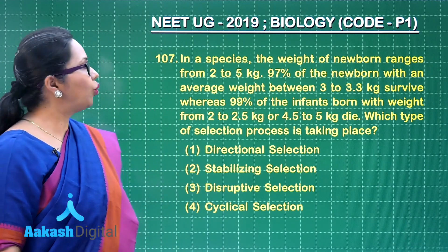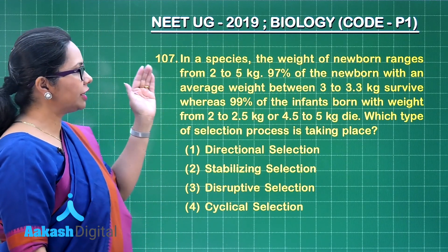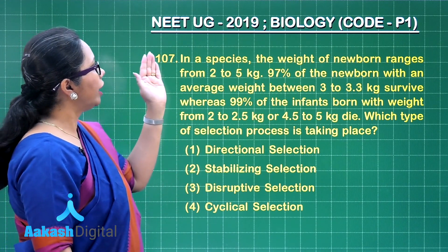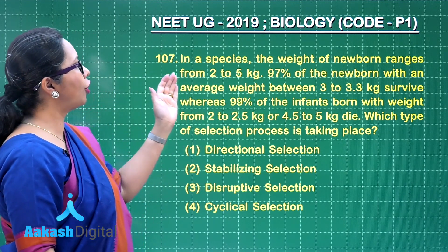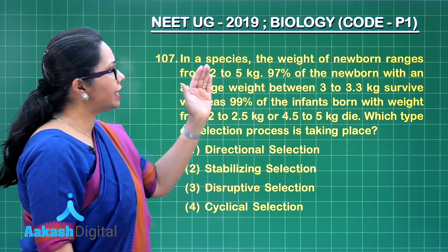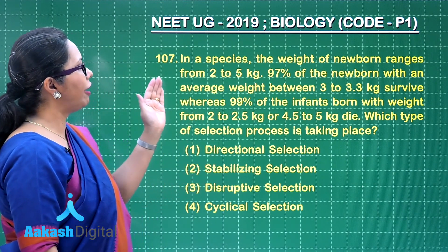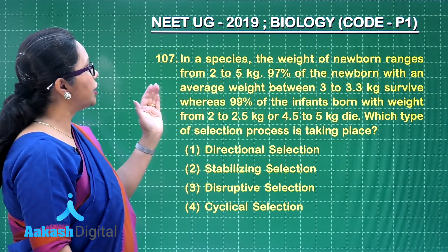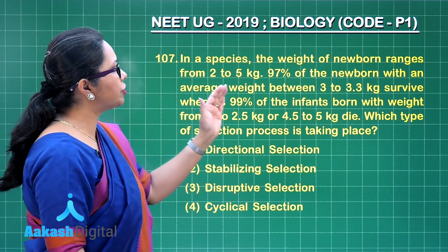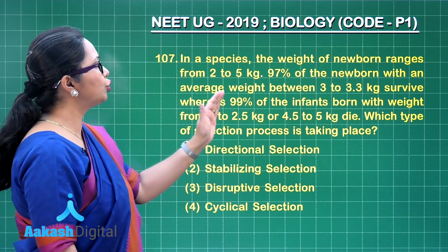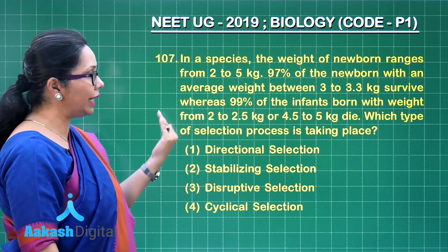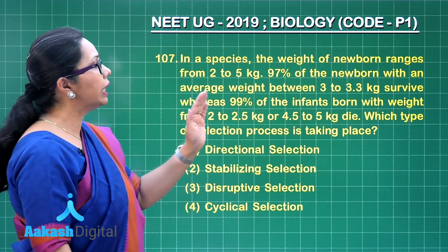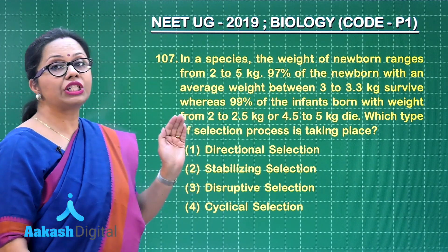Let's discuss question 107. This is a question from evolution and natural selection. In a species, the weight of newborns ranges from 2 to 5 kg, and 97% of newborns with an average weight between 3 to 3.3 kg — the mid-range — survive. Whereas 99% of infants born with weight from 2 to 2.5 kg or 4.5 to 5 kg die. Which type of selection process is taking place?